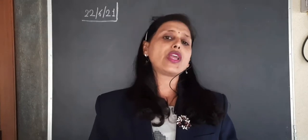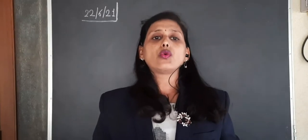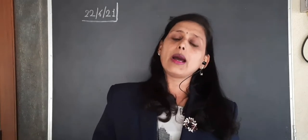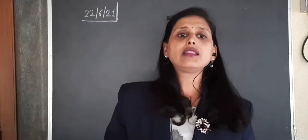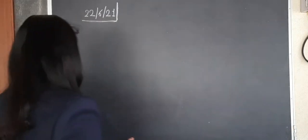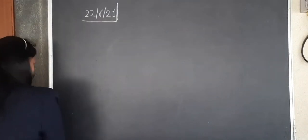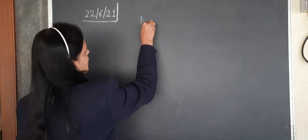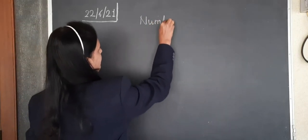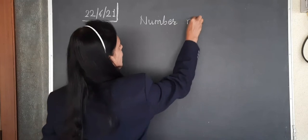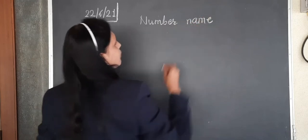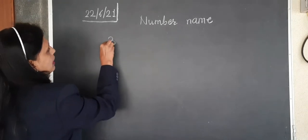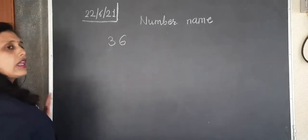You have already learned this, we're just revising it. How to write the number name and how to write the number. So let's start. First we will see how to write number names. For that I will take one number, I will take 36.